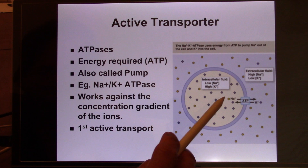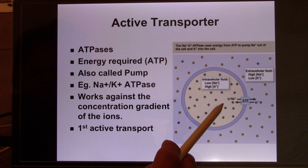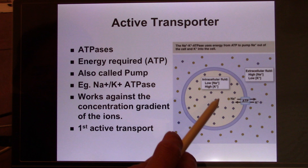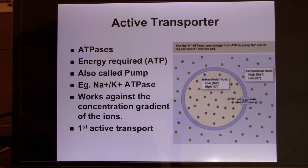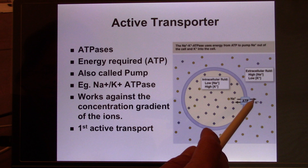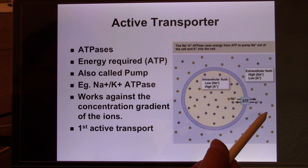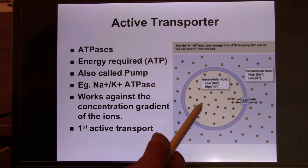So it pumps three positive charges out and two positive charges in. This creates a different electrical gradient as well. When we talk about neurons and how they are able to make the inside more negative than the outside — there is this pump running 24 hours a day, 7 days a week, making not just high sodium outside, but also pumping more positive charge ions out than in, making the inside become more negative. In neurons, the inside is about minus 70 millivolts.